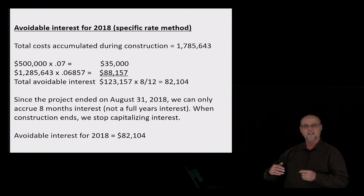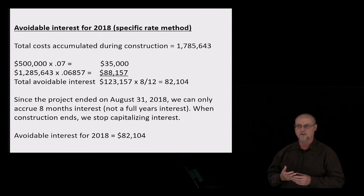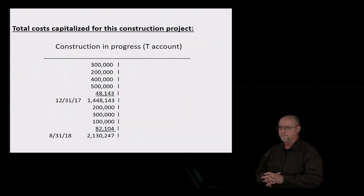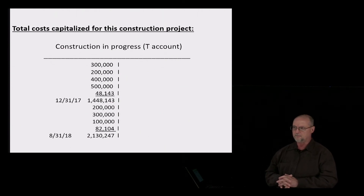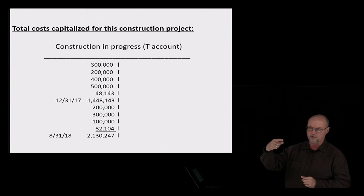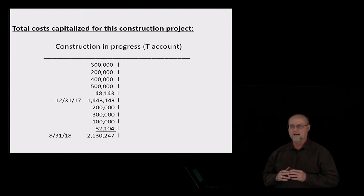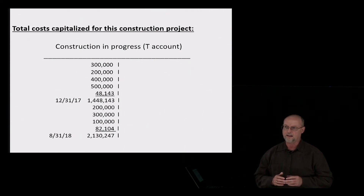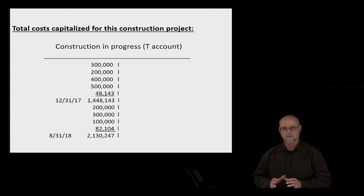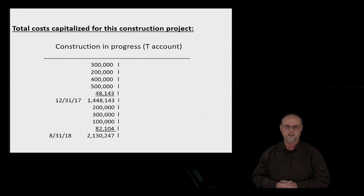That's the amount we add to the T-account on the balance sheet to figure out the total cost of the project. As of December 31st, 2017, we had $1,448,143. In 2018, we had three more expenditures of $200,000, $300,000, and $100,000, plus the avoidable interest of $82,104. This project had a total cost of $2,130,247. You'll want to look at this probably two or three times — hit pause, rewind, have your notes and a calculator in front of you, and calculate these numbers along with me to reinforce the concept. And that's capitalized interest.